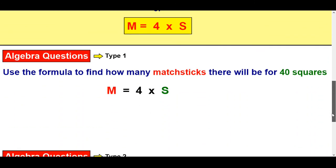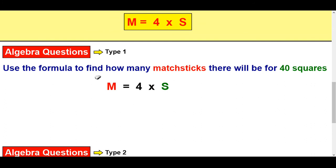We'll just do a couple of calculations with it and to work things out. So use the formula to find out how many matchsticks will be for 40 squares. I know that S is 40. So 4 times 40. Well 4 fours are 16, check on the 0, 160.